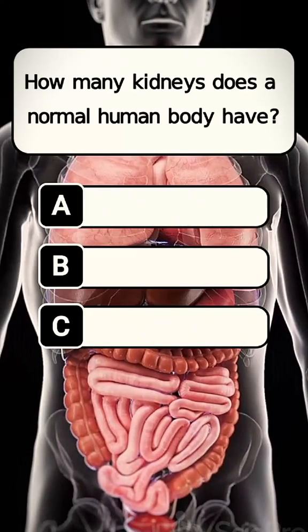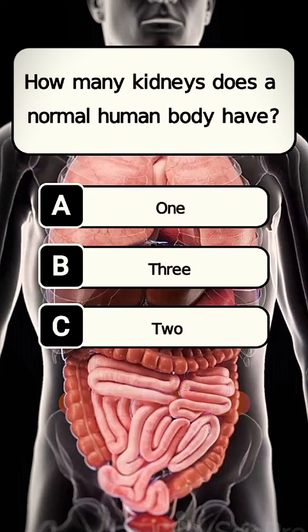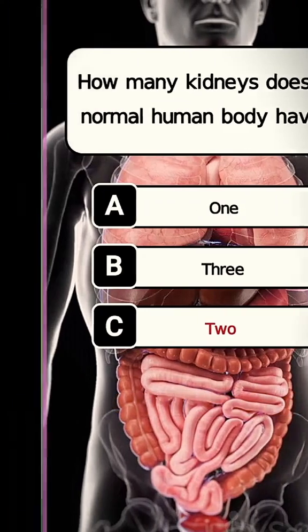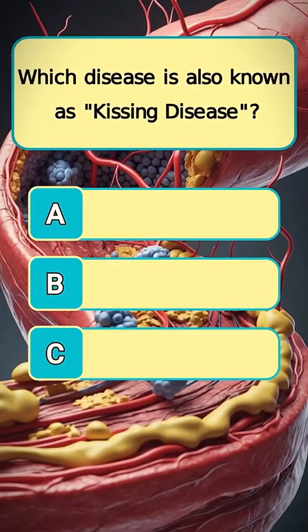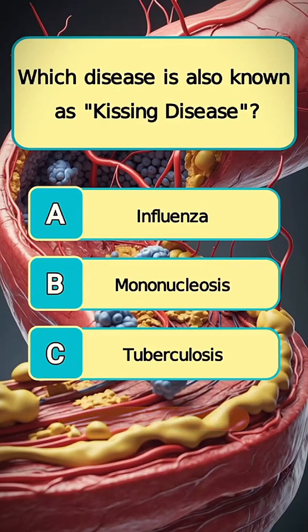How many kidneys does a normal human body have? Answer C. Which disease is also known as the kissing disease? Answer B. Mononucleosis.